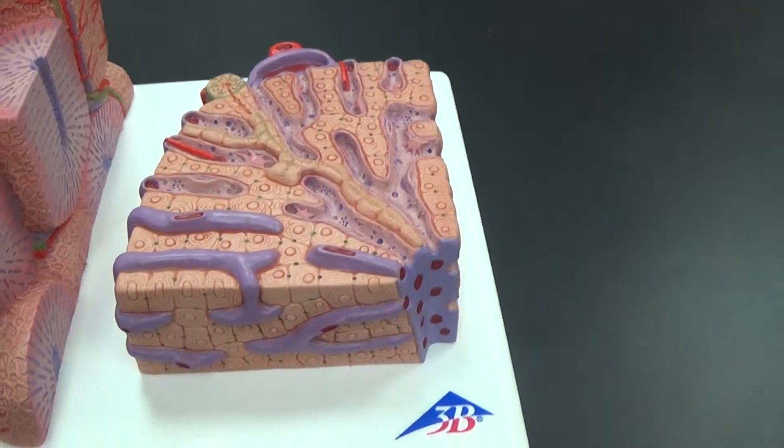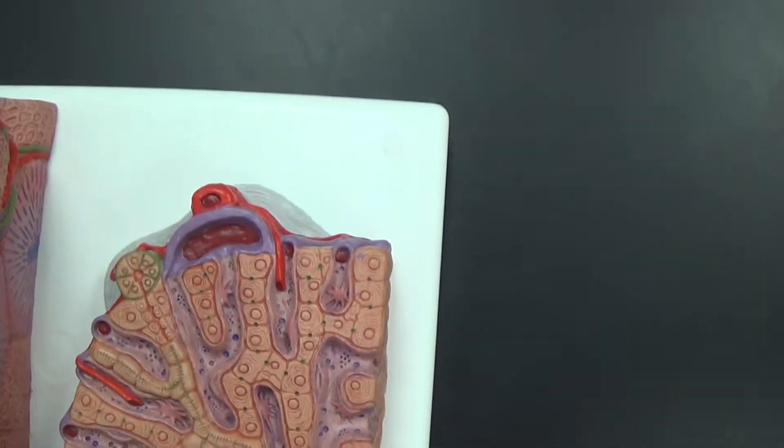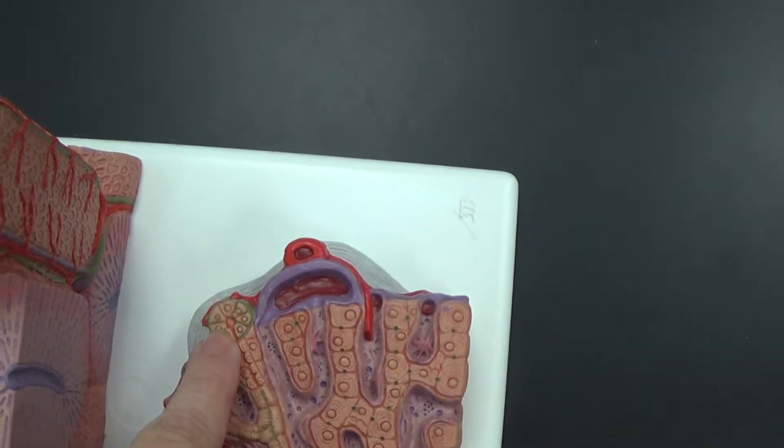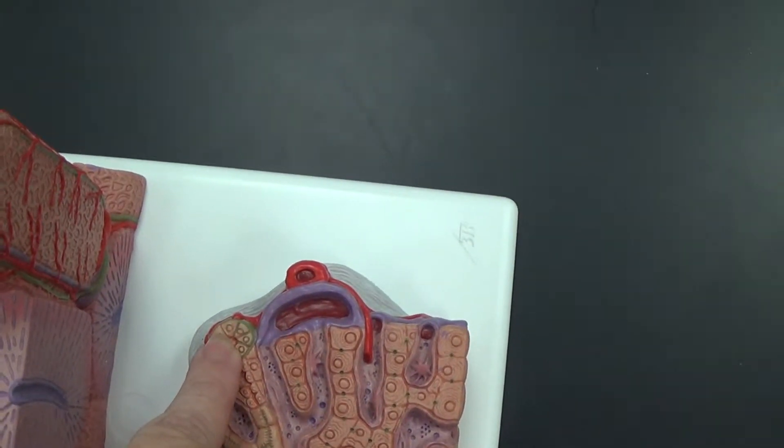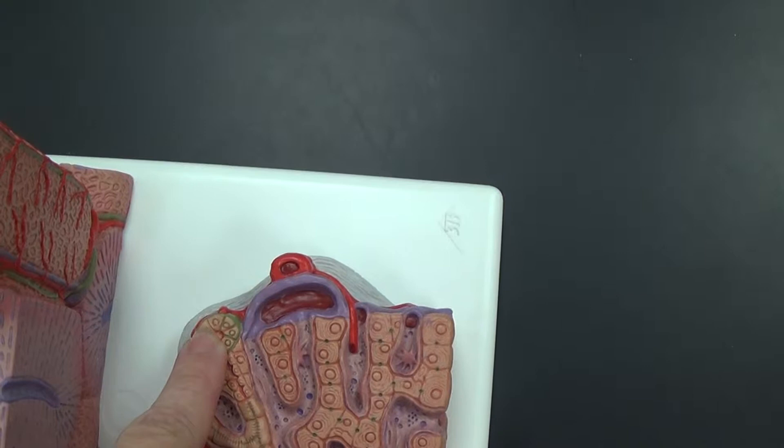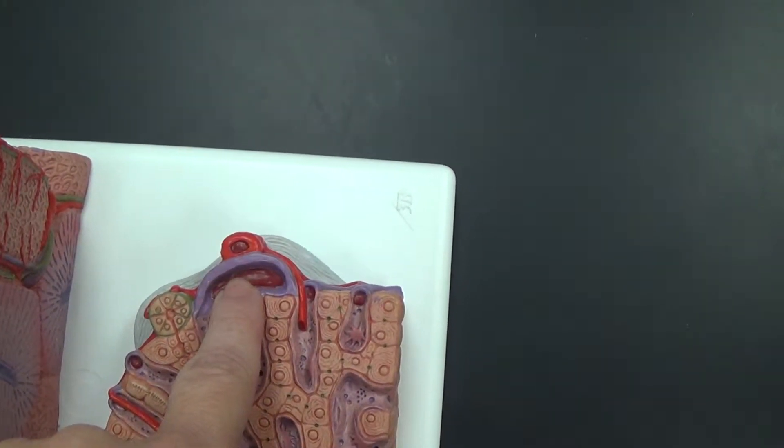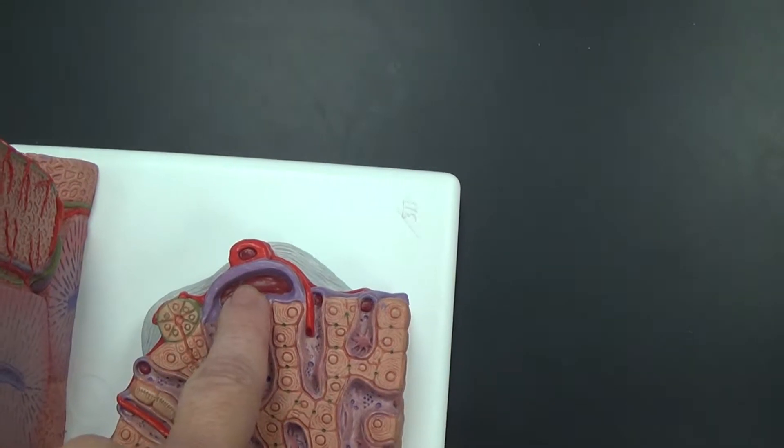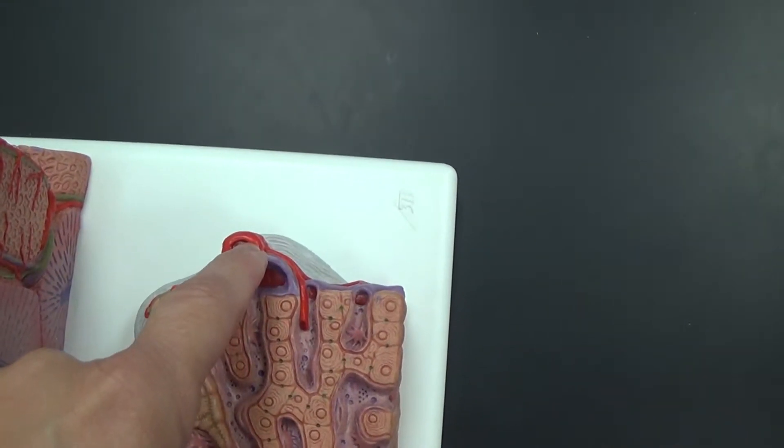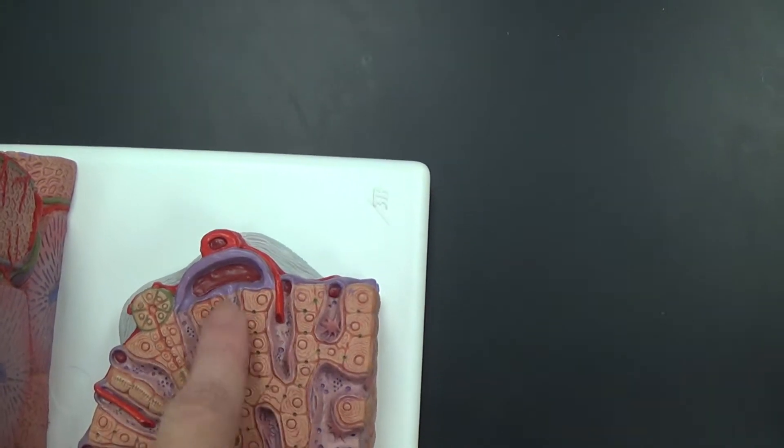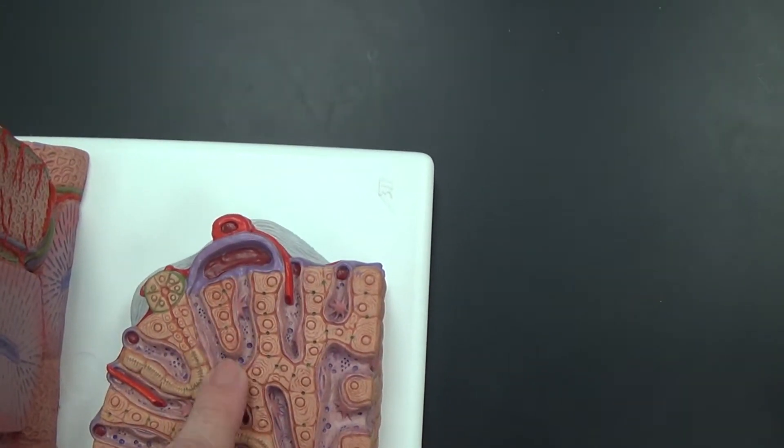The portal triad here is on the back side. And what we see is red, purple, and this green tube. This green tube is the bile duct. The purple tube is the hepatic portal vein, and the hepatic artery is in red here. So the red and purple are dumping blood into these sinusoids.